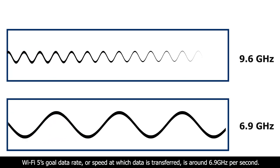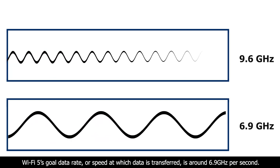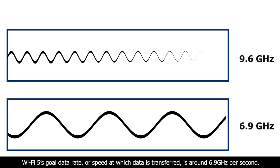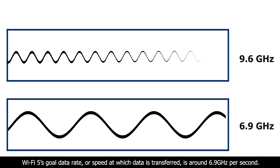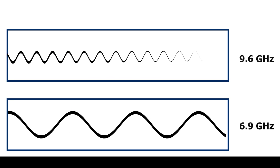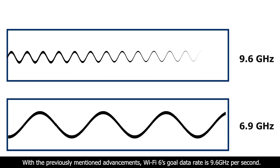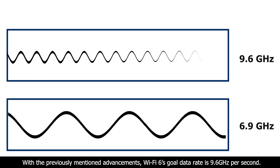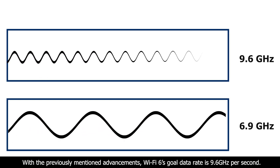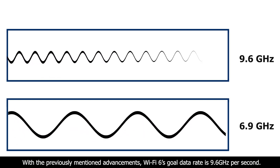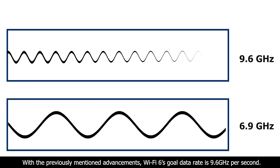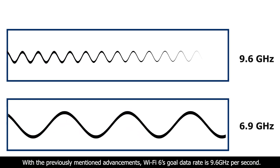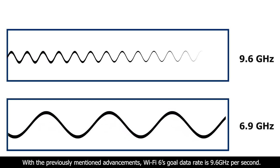Fourth, maximum data rates: Wi-Fi 5's peak data rate — the speed at which data is transferred — is around 6.9 gigabits per second. With the previously mentioned advancements, Wi-Fi 6's peak data rate is 9.6 gigabits per second.